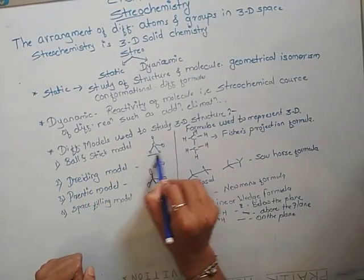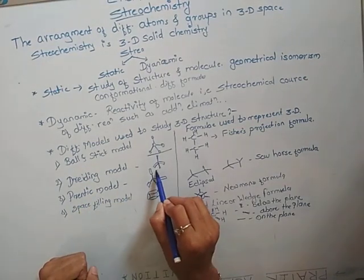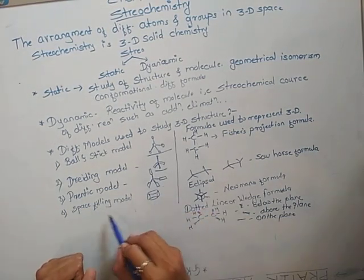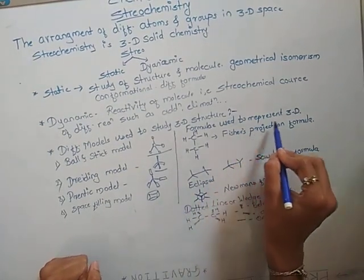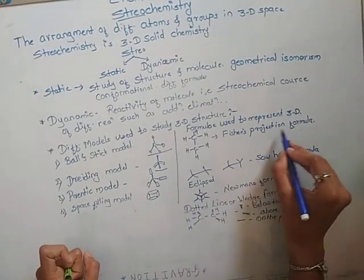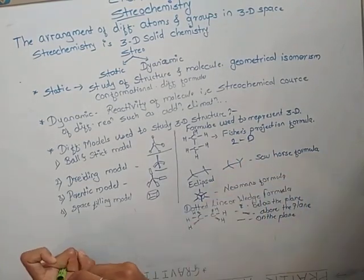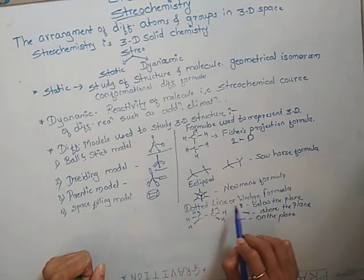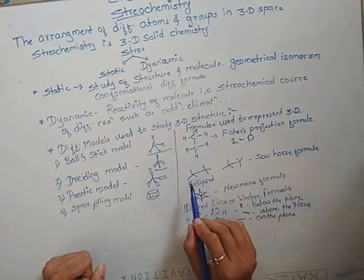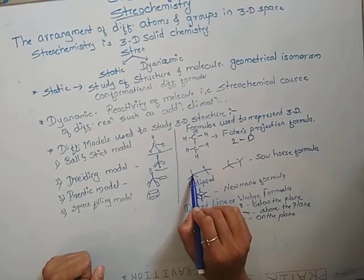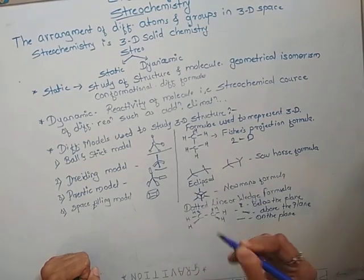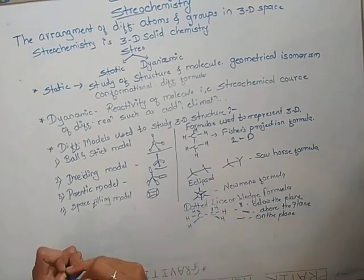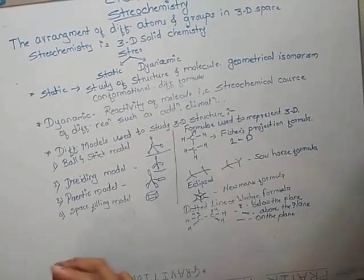We also discussed different models used for 3D structure: ball and stick model, Drude model, space-filling model, and printized model. The formulas discussed were: Fischer projection formula (2D), Sawhorse formula, Newman formula, and dot-line wedge formula. In Sawhorse formula the observer is sideways so two carbons are seen diagonally; in Newman's formula the observer is at front so two carbons appear as superimposed circles. If you like this video, please subscribe to our channel. Thank you for watching.